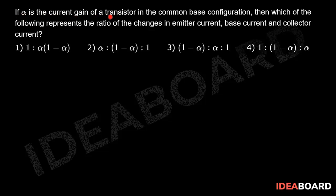If alpha is the current gain of a transistor in the common base configuration, then which of the following represents the ratio of the changes in the emitter current, base current, and the collector current?